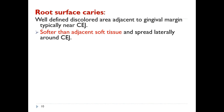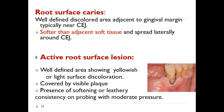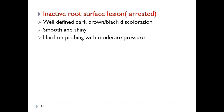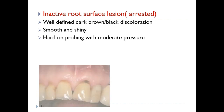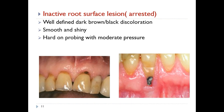Active root surface lesions spread laterally around the CEJ and show well-defined areas with yellowish or light surface discoloration, covered by visible plaque, with softening or leathery consistency on probing with moderate pressure. Inactive or arrested root surface lesions are well-defined, showing black or dark brown discoloration; they are smooth and shiny and hard when probed with moderate pressure.